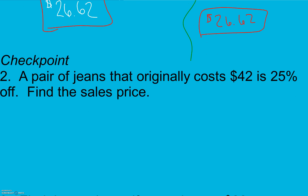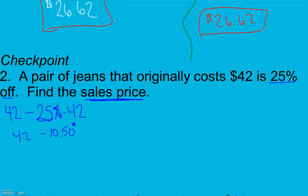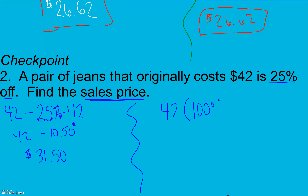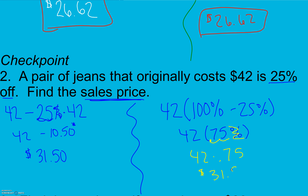A pair of jeans that originally cost $42 is 25% off — find the sales price. Give this a try. It originally costs $42 and it's on sale, so we subtract 25% of $42. Moving the decimal two places, 0.25 times 42 gives $10.50, which is the discount amount. Subtracting from the original gives $31.50. Alternatively, start with 100% and take off 25%, meaning we pay 75%. Moving the decimal two places, 42 times 0.75 also gives $31.50.